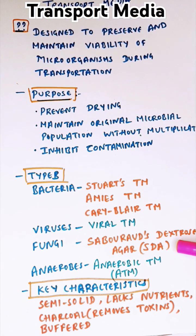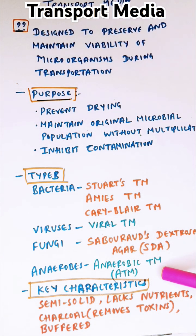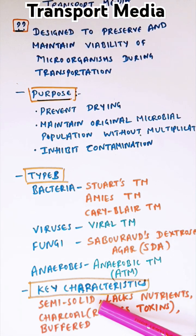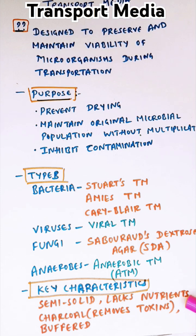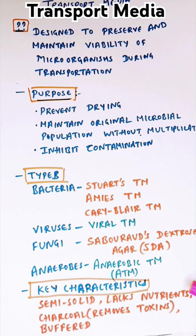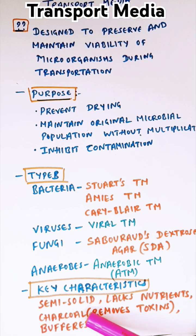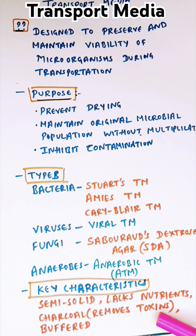For viruses, we have viral transport media. For fungi, Sabouraud dextrose agar itself can be used as a transport media. For anaerobes, we have anaerobic transport media. The key characteristics of transport media: the majority are semi-solid in nature and lack nutrients, because we don't want microbial overgrowth — they are just for transporting the organism through the process. Sometimes charcoal is used in transport media to remove toxins, and it is a buffered solution.